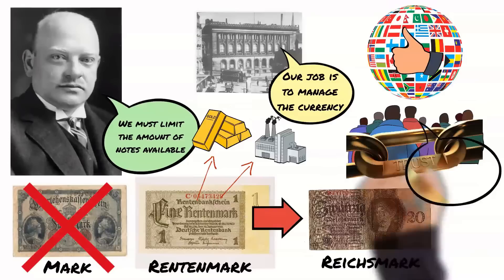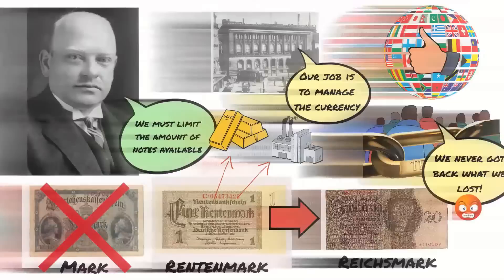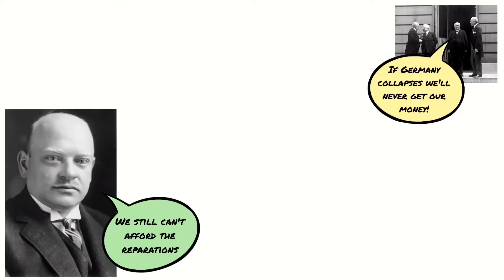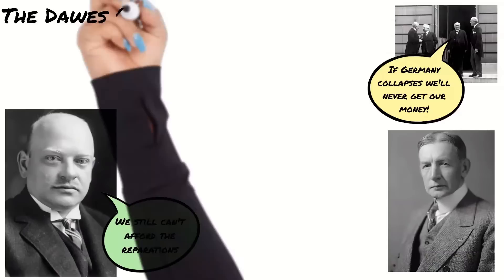However, some people were still angry because they never got their savings back, and others who had lost businesses had to start from scratch. To prevent future economic disaster, Stresemann then went on to negotiate with the Allies about the reparations payments. It had become clear to the Allies that it was not in their interest for Germany to collapse. In 1924, Gustav Stresemann met with Charles Dawes, an American banker, to come up with a plan to aid Germany's recovery.